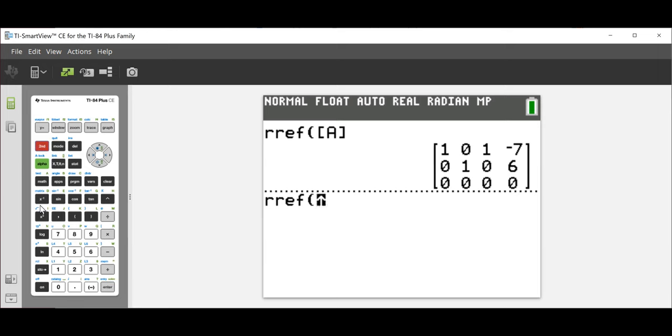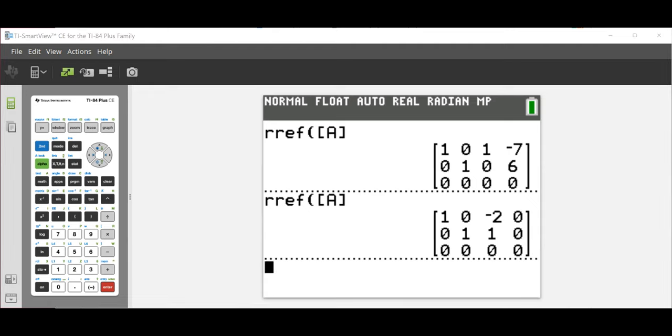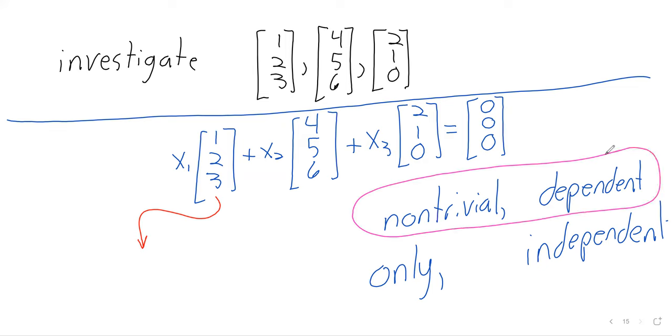And then we quit out. Reduced row echelon form on this thing. And we see that there is a free variable. So, this has infinitely many solutions. In particular, it has solutions other than the trivial solution. So, let me unclutter this by erasing some stuff. And because there are non-trivial solutions, this set of vectors is dependent.